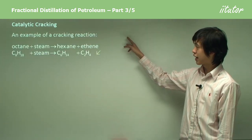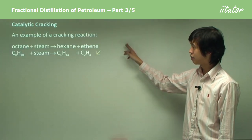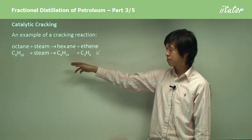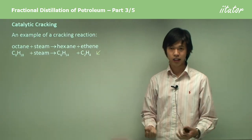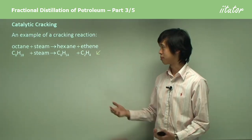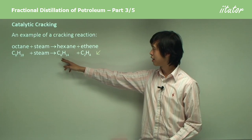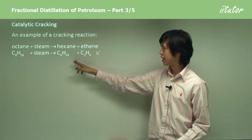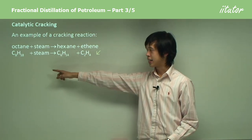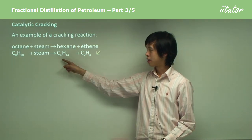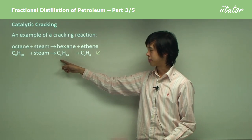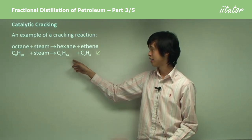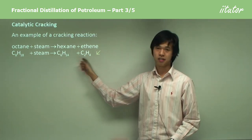An example of catalytic cracking would be octane plus steam — steam provides the heat in this case. This breaks up into hexane plus ethene. So C8 plus steam goes to form C6H14, which is hexane, and ethene.